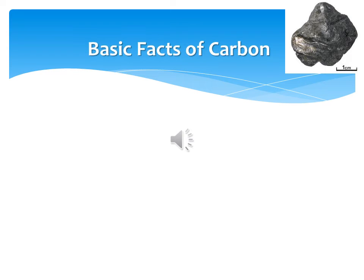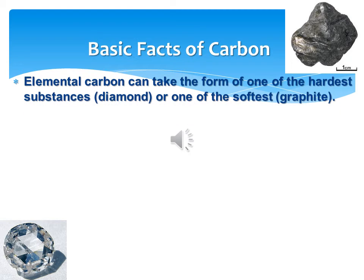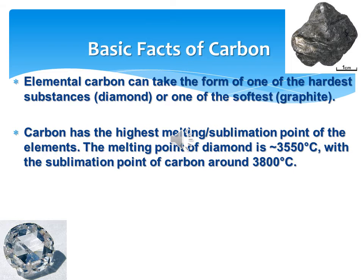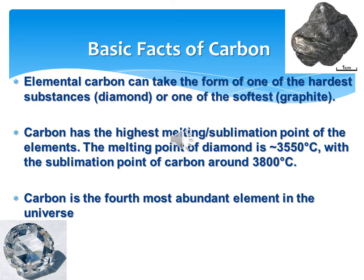The basic facts of carbon. Elemental carbon can take the form of one of the hardest substances, which is diamond, or one of the softest, which is graphite. Carbon has the highest melting and sublimation point of all elements. The melting point of diamond is about 3550 degrees Celsius, and the sublimation point of carbon is around 3800 degrees Celsius. In addition, carbon is the fourth most abundant element in the universe.